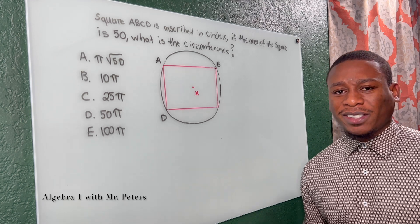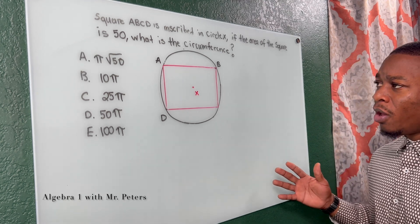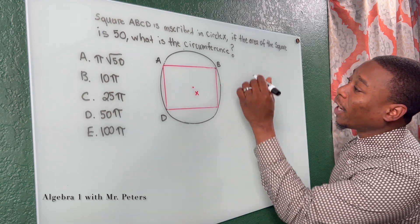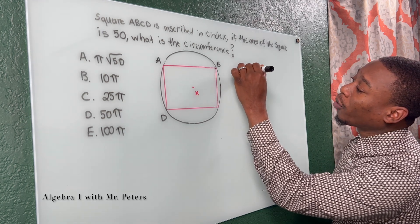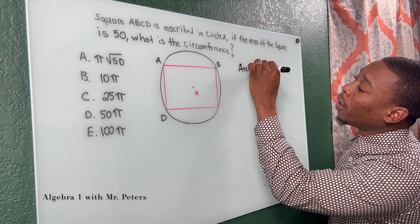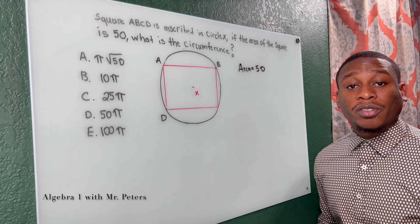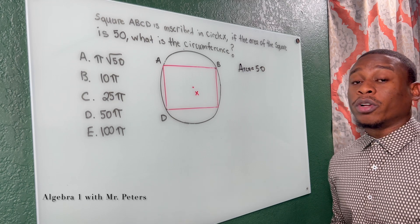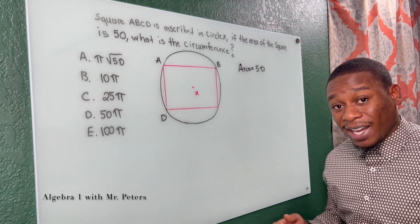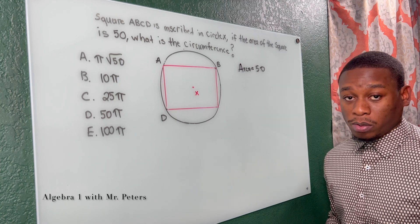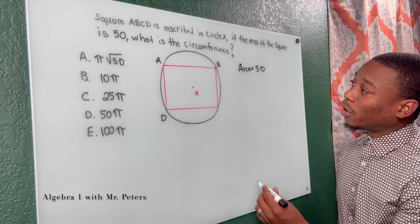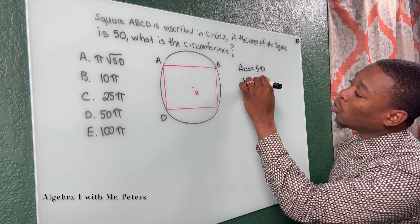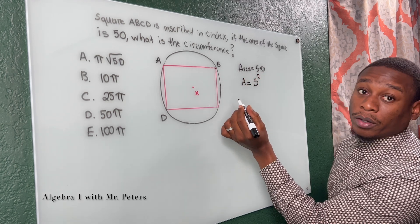In our first problem they're asking us for the circumference. We have a square inside a circle and all they've given us was the area for the square, which is 50. To get the circumference of a circle we have to either know the radius or the diameter, and that is what we're trying to find. The formula for area of a square is area equals s squared.